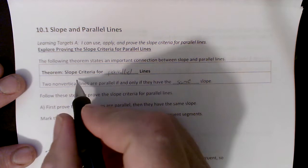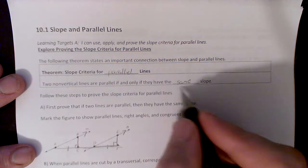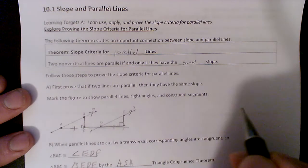So, theorem: slope criteria for parallel lines. Two non-vertical lines are parallel if and only if they have the same slope. Follow these steps to prove the slope criteria for parallel lines.